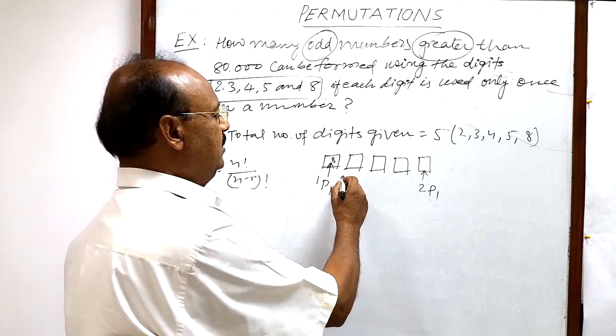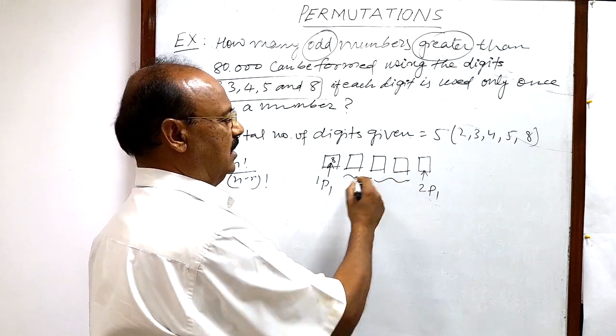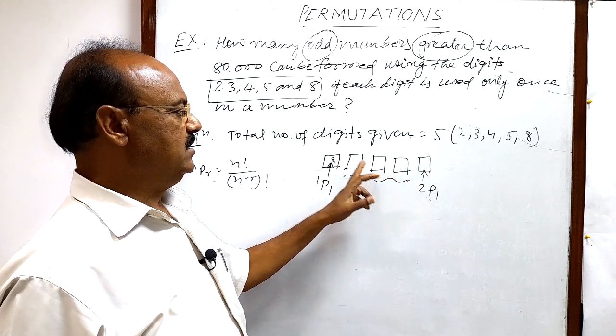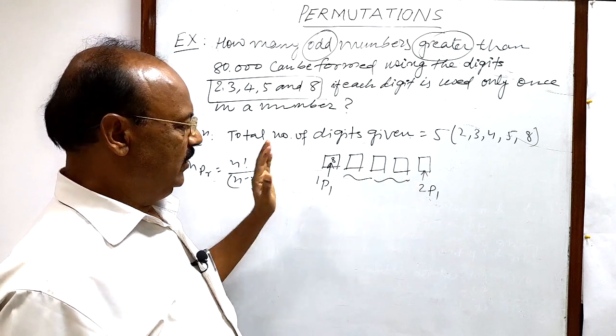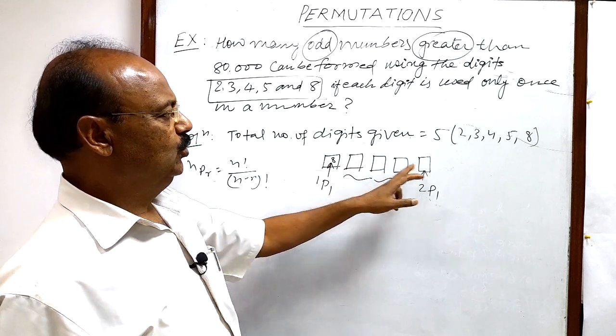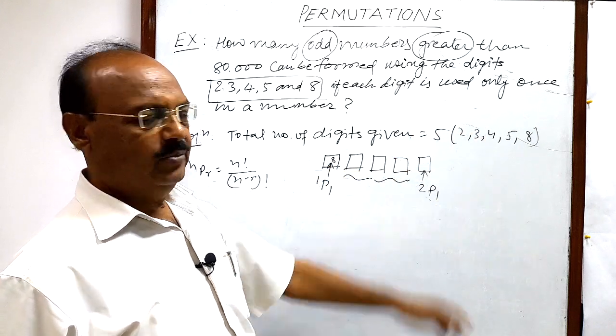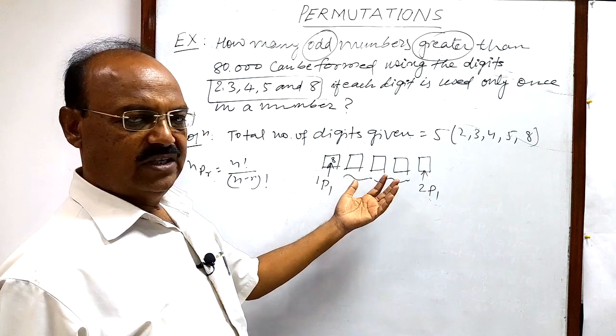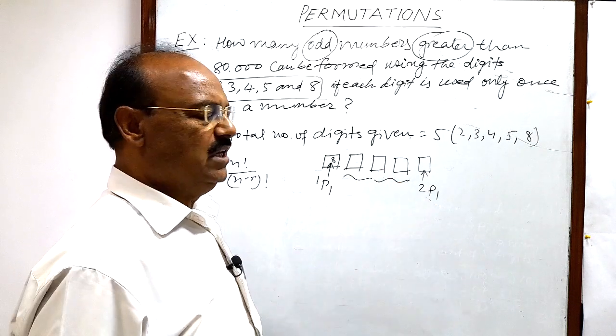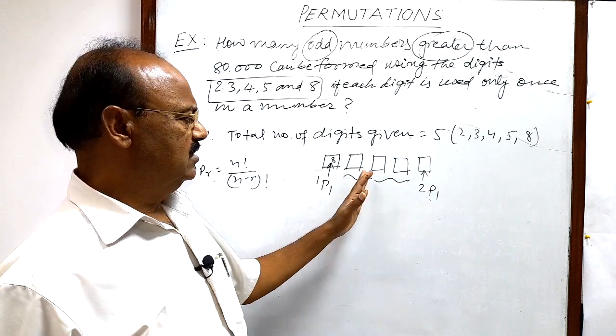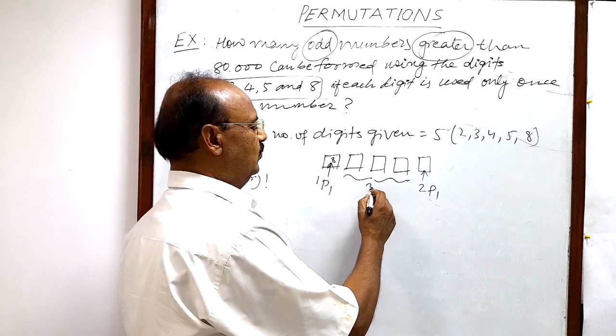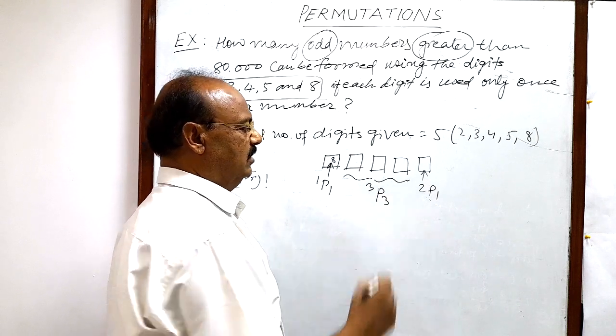And remaining 3 places are here: tens place, hundreds place, and thousands place. And we have already selected 2 digits out of 5 given digits. So remaining number of digits is 3 and places is 3. So we have to select 3 digits for these 3 places. In how many ways? 3P3.